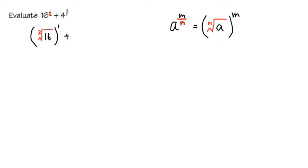Plus, let's take care of this as well. Well, we have 4 raised to 3 half power. I'm going to once again look at the half power. And the half power will turn into the square root, which is the second root. And then the inside is the 4. And then we take this raised to the third power.